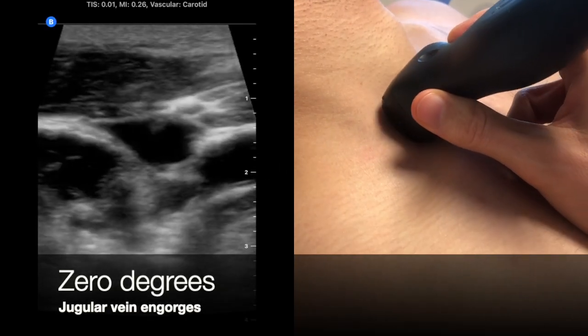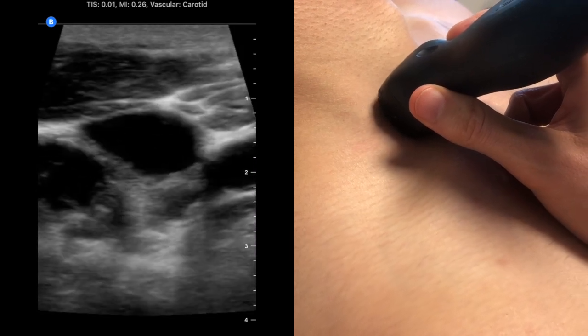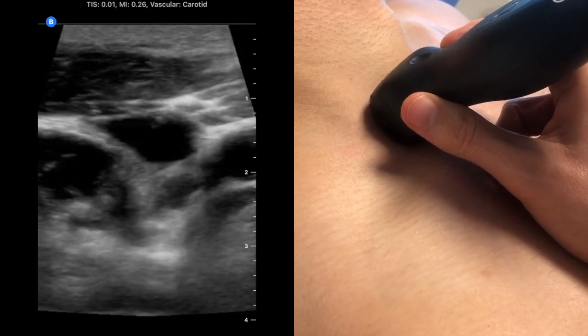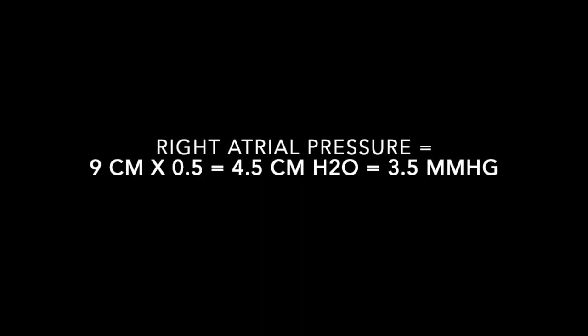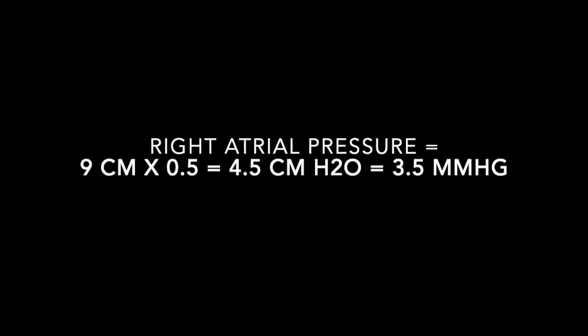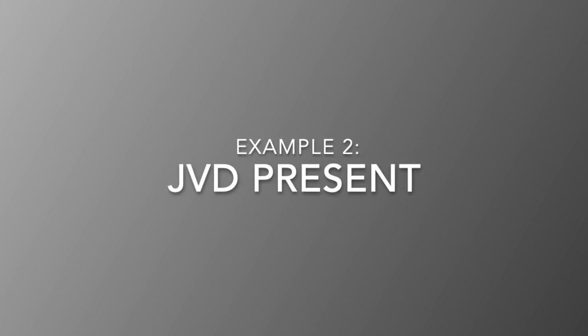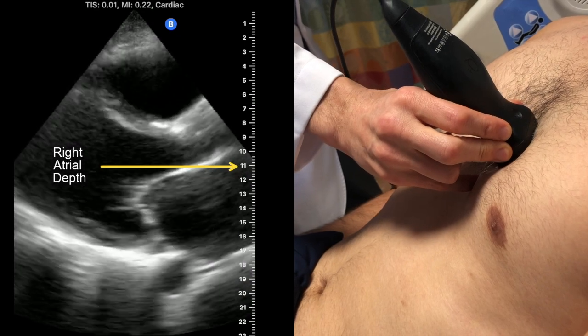In this patient, the jugular vein engorges at 0 degrees, so to estimate right atrial pressure in this case, you would just multiply right atrial depth by 0.5. Here, the aortic valve attaches to the posterior LVOT at about 11 centimeters.